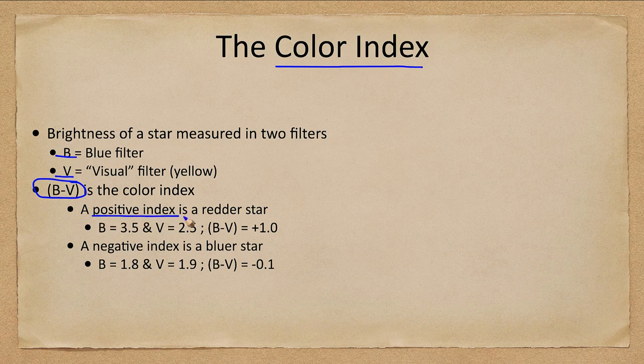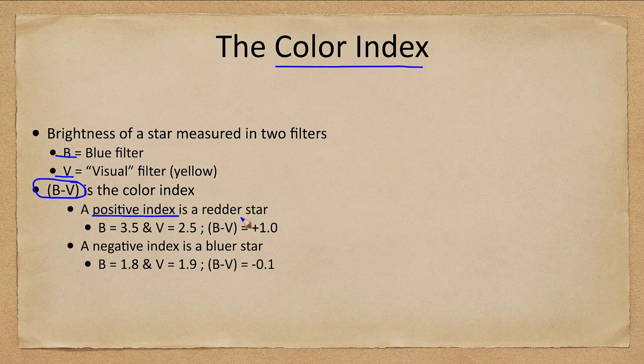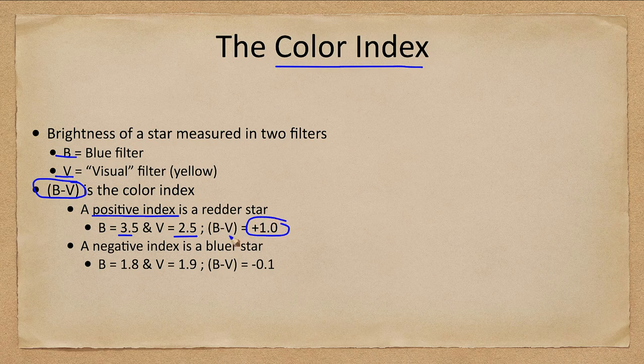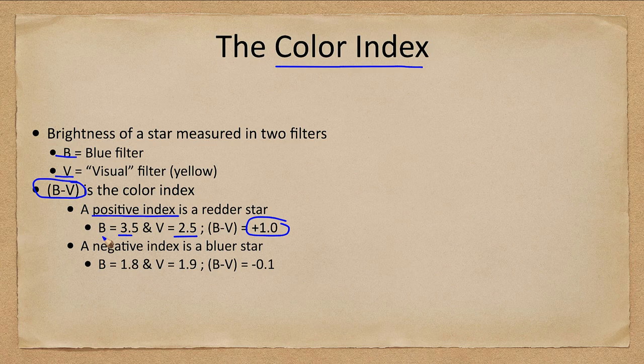So if the blue magnitude is 3.5 and the V magnitude is 2.5, subtracting them gives you one and that means it's going to be a redder, cooler star. Remember that magnitudes are measured backwards. So the B magnitude means it's fainter in the blue than in the visual here.